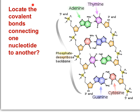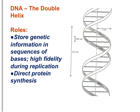Can you locate the covalent bonds connecting one nucleotide to another? There are covalent bonds on the left strand and on the right strand. Here is a very simplified view of DNA — the nucleic acid. Notice it appears twisted in a helical fashion: DNA, the double helix.